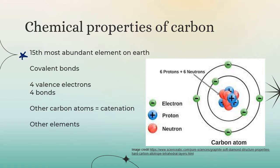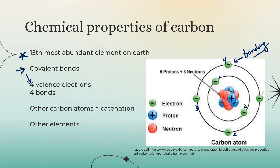Carbon is an essential element for biochemistry and organic chemistry — the 15th most abundant element on earth. It's really good at making covalent bonds, which are bonds in which electrons are being shared between atoms. Carbon is really good at making covalent bonds because it has four valence electrons — the electrons in the outermost energy level of the atom. Carbon makes lots of bonds because of those four valence electrons.